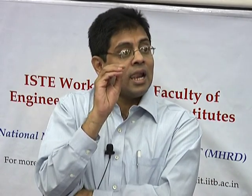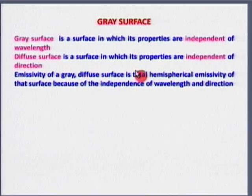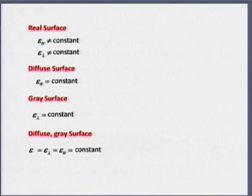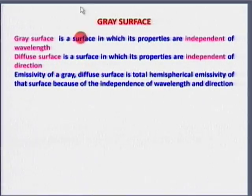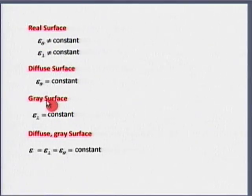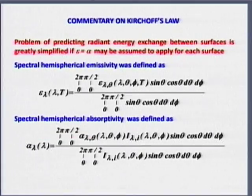Epsilon equals alpha is not sacred — it is restrictive based on certain assumptions. I might be a diffuse emitter and grey surface for emission but need not be diffuse or grey for absorption. I might absorb only light coming in a particular direction or only a specific wavelength. The diffuse-grey approximation gives all properties equal to one value, and invariably that is what we end up using.